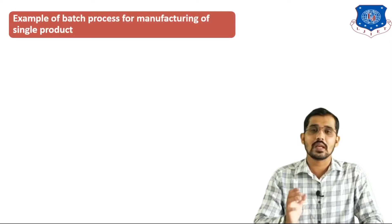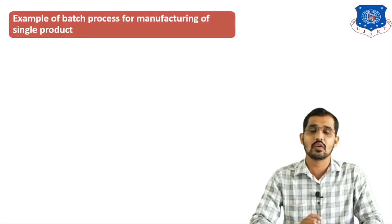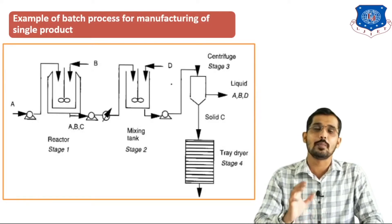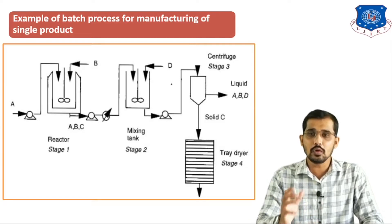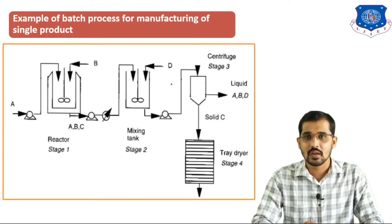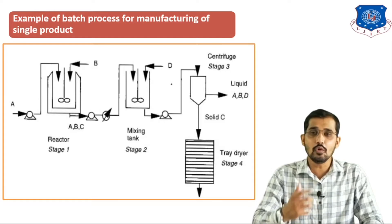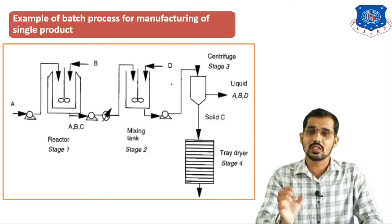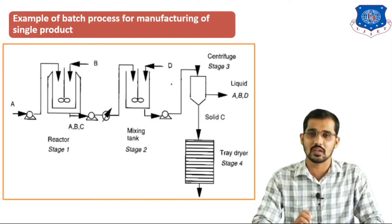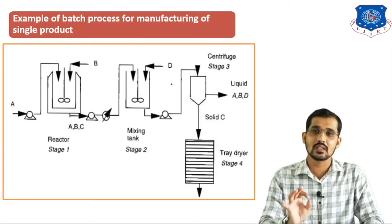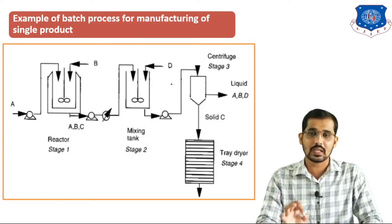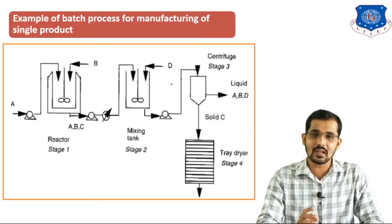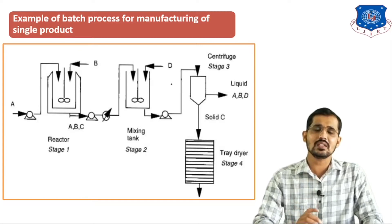On the screen you can see an example of batch processes for manufacturing of a single product. Batch process means we cannot put or take out anything during the reaction. Semi-batch process means we can put or take out material during the reaction. There are four stages: reactor, mixing tank, centrifuge, and tray dryer.